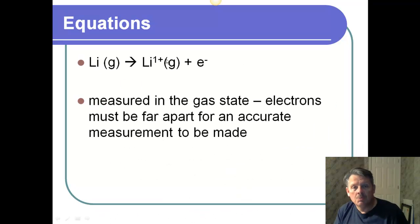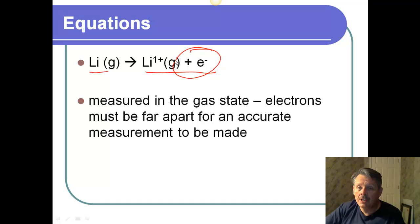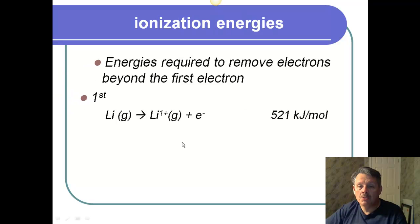So you'll see some equations like this where you notice that you have lithium, and lithium is a gas. And the ionization energy is going to be measured in kilojoules per mole. How much energy does it take to rip this electron away from lithium? And we'll deal with this in kilojoules per mole. It's always measured in a gaseous state because electrons need to be far apart for an accurate measurement to be made.